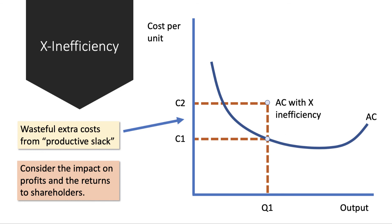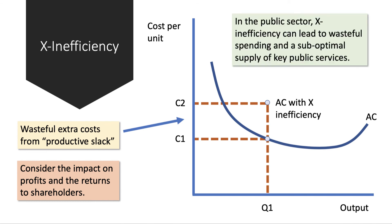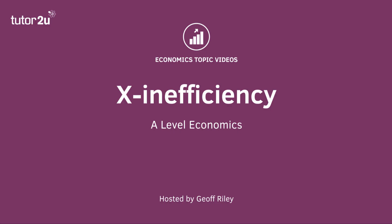Consider the impact of that on the profitability of the firm and the returns to the equity owners — the shareholders. For a public sector organization, X-inefficiency with higher costs can mean you don't get as much value for money from your annual budget. Wasteful cost and spending can lead to a sub-optimal supply of key public services, be it in health, education, or transport.